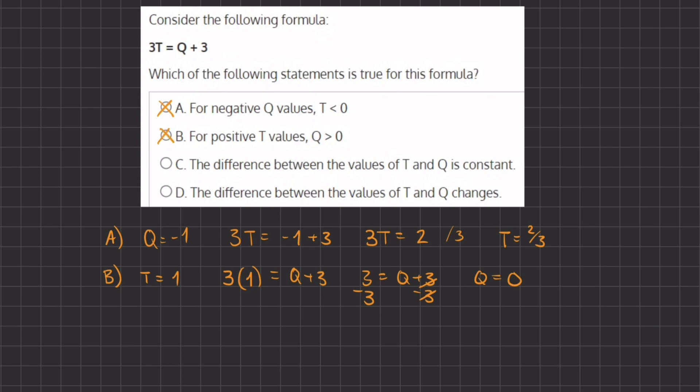therefore B is incorrect. Now for answers C and D, we have to understand better what the difference between T and Q or Q and T is. Now it would be easier to understand the difference between Q and T instead of T and Q because there is a constant